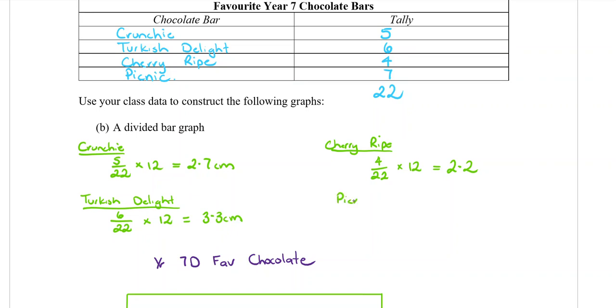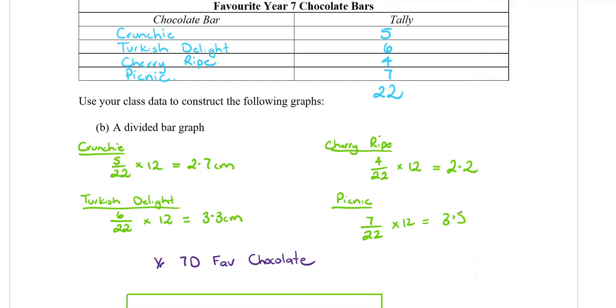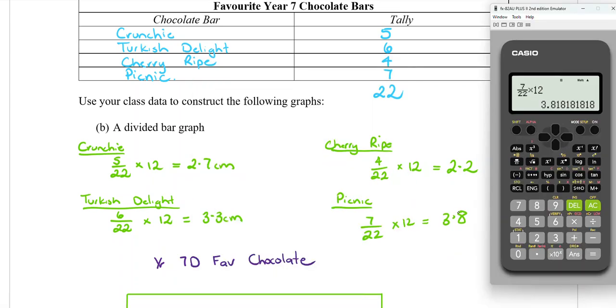And lastly Picnic is 7 out of 22 times by 12, which is 3.8. Now to make sure that your numbers make sense, let's add together these four numbers and make sure that they add up to 12. Because if they don't, if there's a significant difference, it means it's not going to work out properly when you try to draw it. So 2.7 plus 3.3 plus 2.2 plus 3.8 equals exactly 12, so it's perfect.